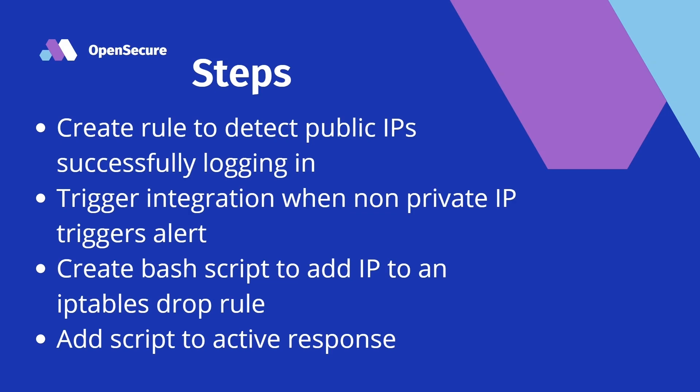The steps to do this: we're going to create a rule to detect public IPs successfully logging in, then trigger the integration when a non-private IP triggers the alert. We'll create a bash script to add the IP that AbuseIPDB returns to an iptables drop rule — but only if it is malicious. We don't want to add a drop rule for IPs that aren't malicious, as those may be legitimate end users. Then we'll add the script to active response so it knows what script to call.